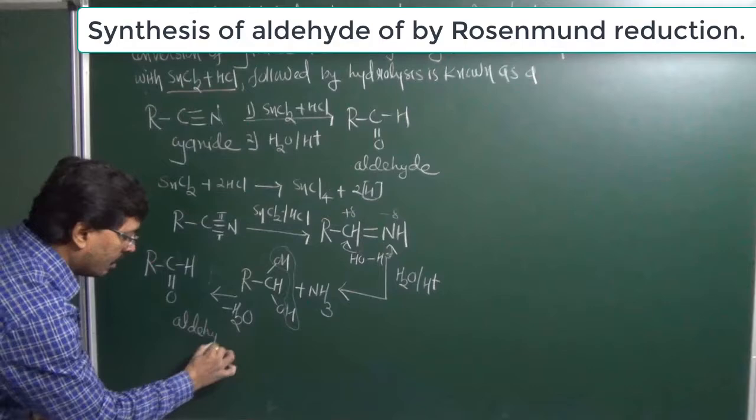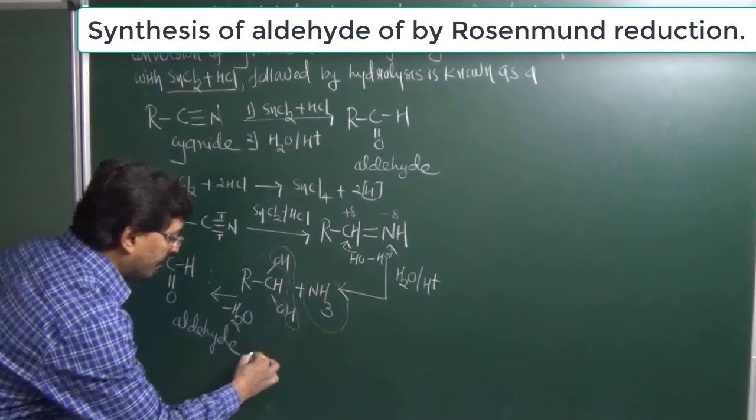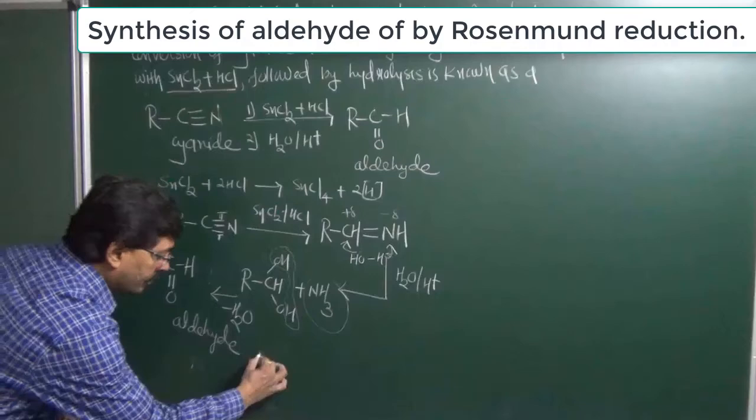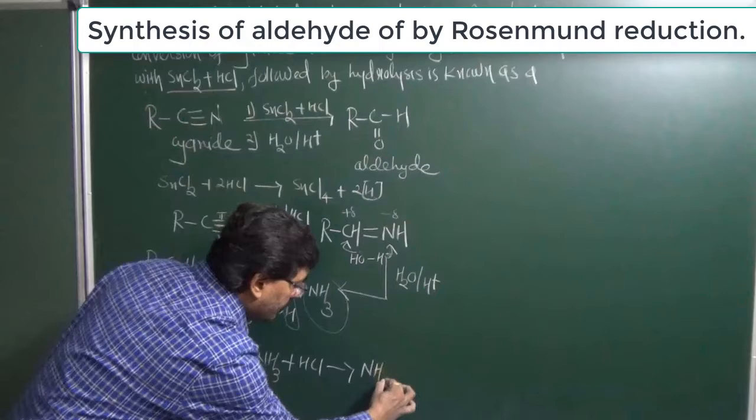It means aldehyde will be obtained. Since our medium is acidic, whatever ammonia is obtained reacts with HCl, giving ammonium chloride as a by-product.